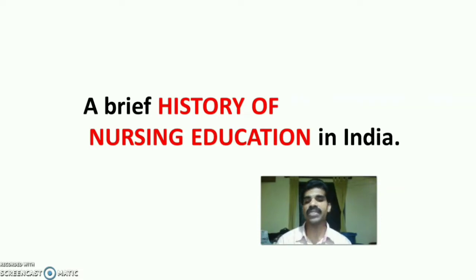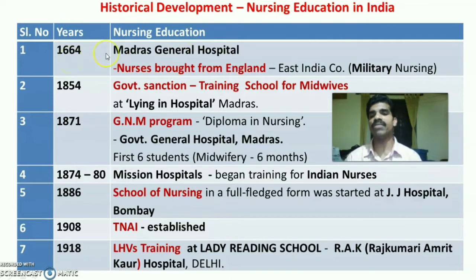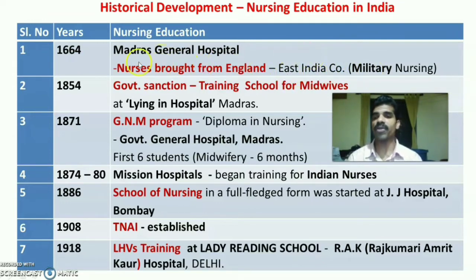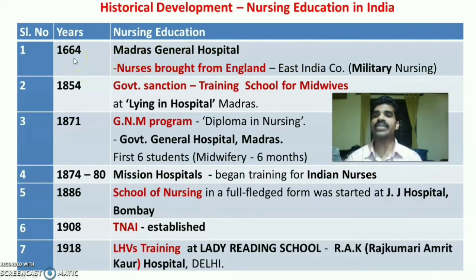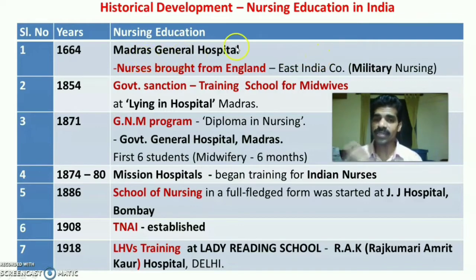Now let us go through the brief history of nursing education in India. The historical development of nursing education in India begins in 1664, when the East India Company brought military nurses. With the help of the East India Company, the Government of India started a hospital — Madras General Hospital in 1664 — as a military hospital. Military nurses were brought from England by the East India Company to render nursing services at Madras General Hospital.